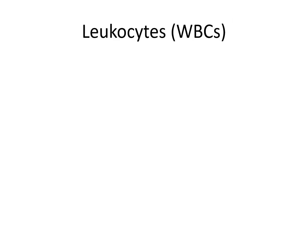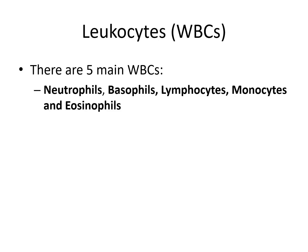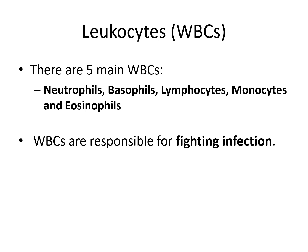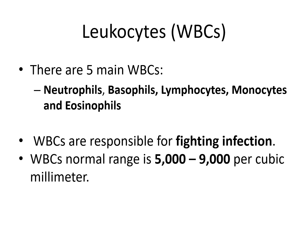Let's talk about leukocytes, or WBCs — white blood cells. There are five main white blood cells: neutrophils, basophils, lymphocytes, monocytes, and eosinophils. White blood cells are responsible for fighting infection. The normal range of white blood cells is 5,000 to 9,000 per cubic millimeter. If you're getting a blood test that includes white blood cell count and it is elevated above 9,000, it is most likely that you are fighting an infection or that you have an infection in your body.